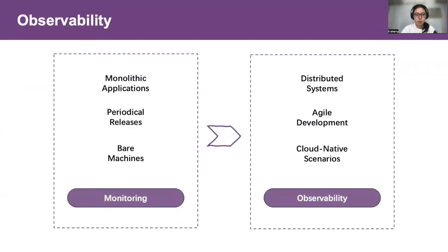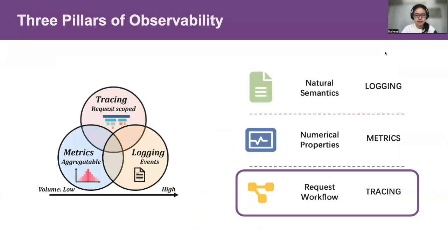Knowing how the entire system works has always been a crucial demand for the IT crew. Systems are rapidly growing and evolving — from monolithic applications to distributed systems, from periodic releases to agile development, from bare machines to cloud-native scenarios. As a result, we need stronger tools to match this increasing level of complexity. Monitoring becomes observability. Logging, metrics, and tracing are known as the three pillars of observability.